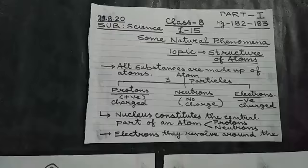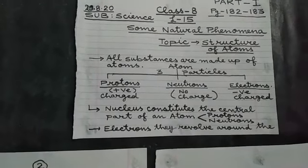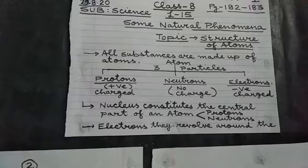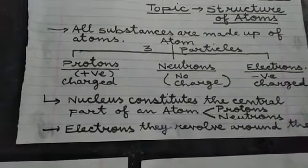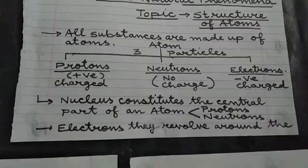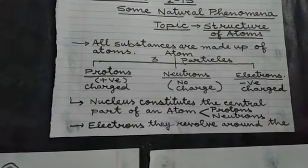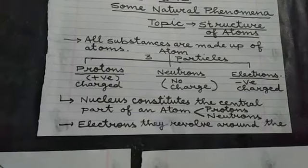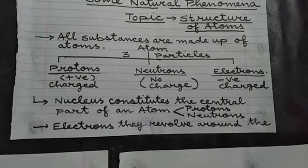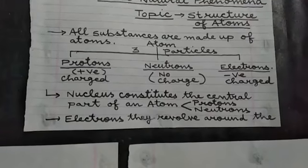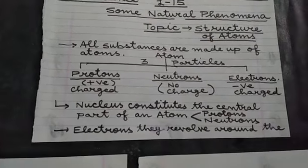In this way, we can say that all the substances, they are made up of atoms. And these atoms, they consist of three fundamental particles — that is the protons, neutrons, and electrons. The protons, they are positively charged. Neutrons, they are having no charge. And the electrons, they are negatively charged particles of the atom.